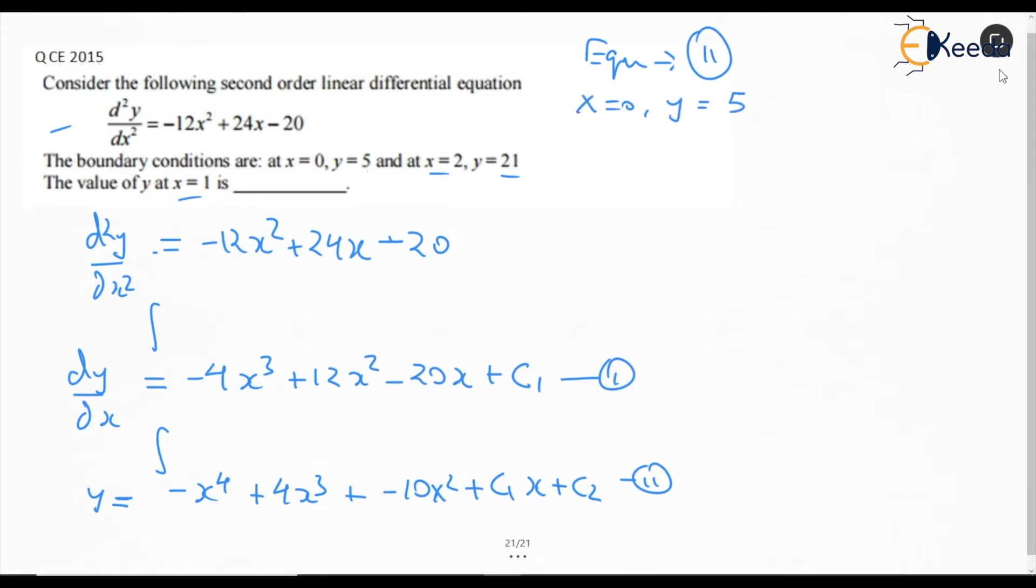We get 5 = 0+0+0+0, so we are left with only c₂. This gives us c₂ = 5 very clearly.